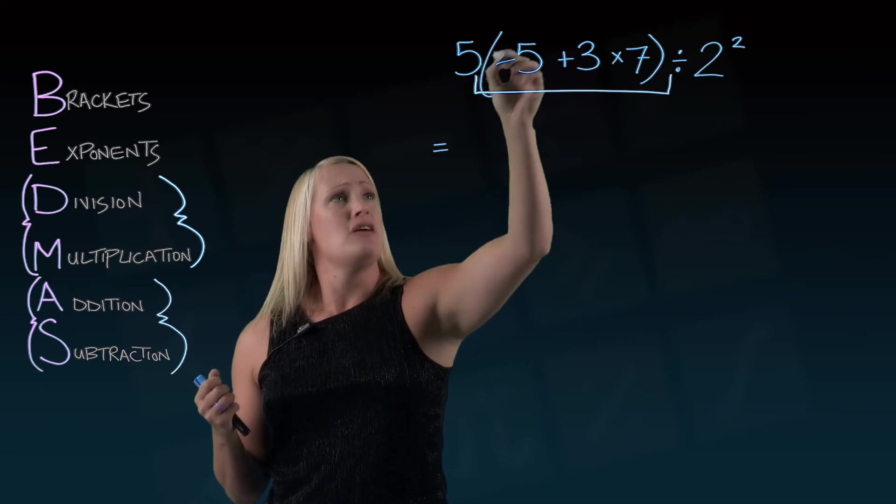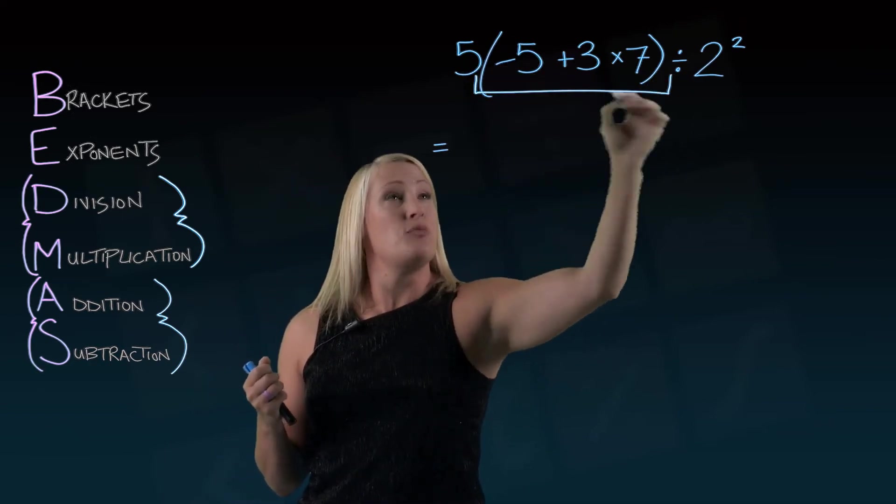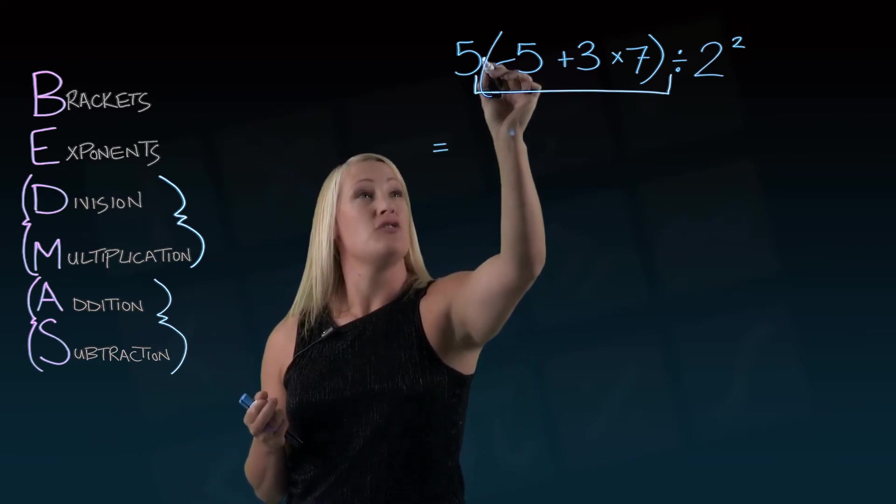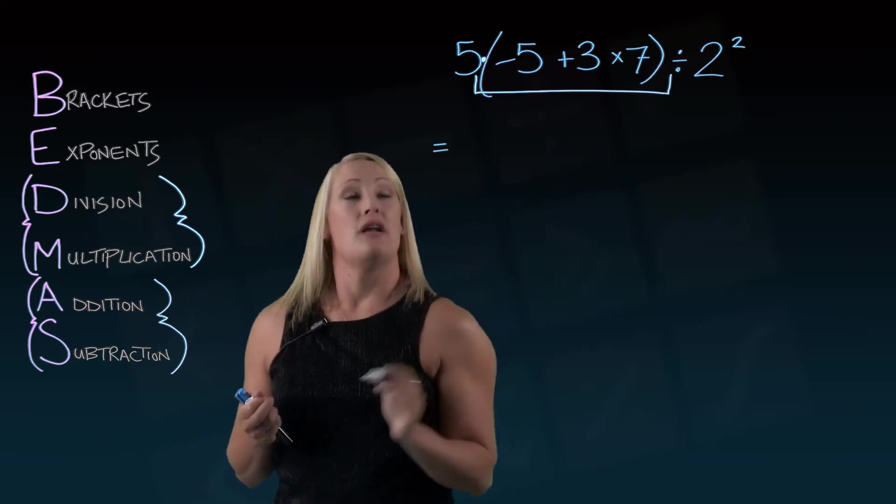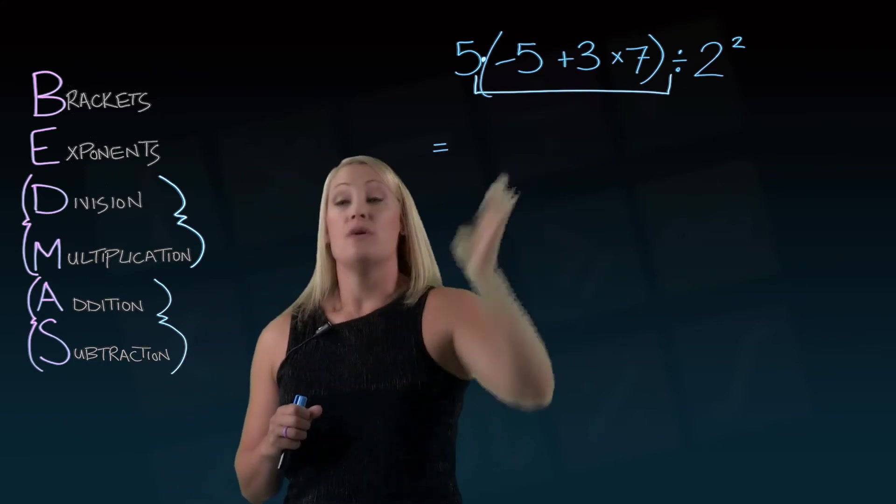We've got a 5 out here and then we've got a bracket. There's no symbol in between this bracket and that 5. If you ever see that happen, the symbol actually is multiply. But a lot of the times it gets left out. You could put it there though if you're more comfortable. So we're going to go inside the brackets.